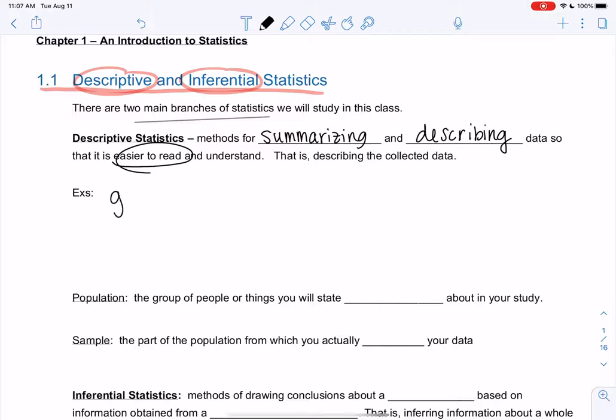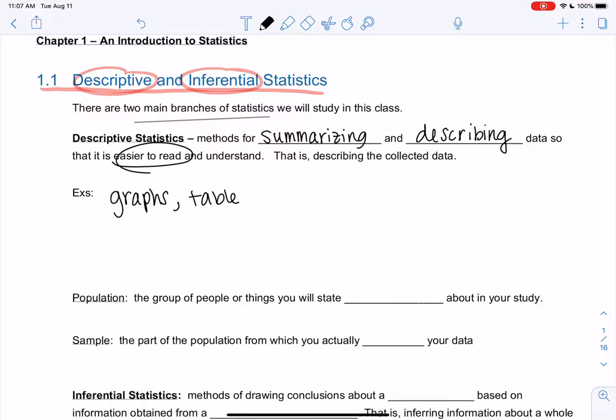So things like graphs are summarizing data, right? It makes it easier to read as a graph. A table makes it easier to read because it's organized in a nice order. Or even calculating an average is a summary.